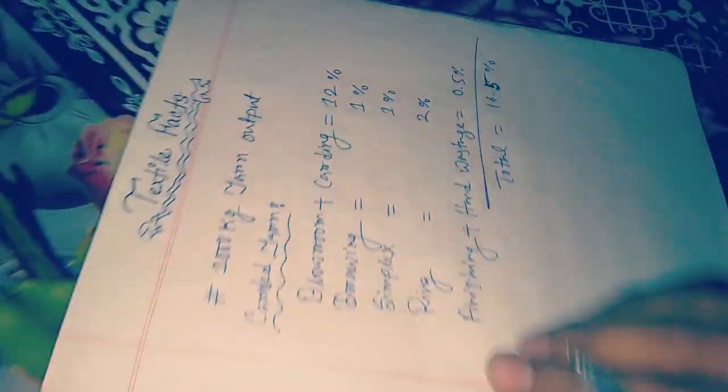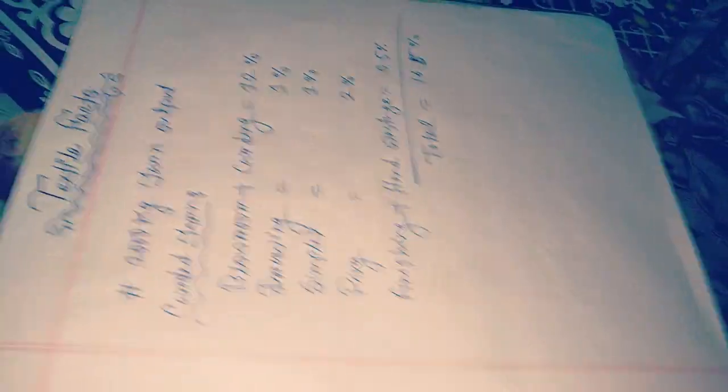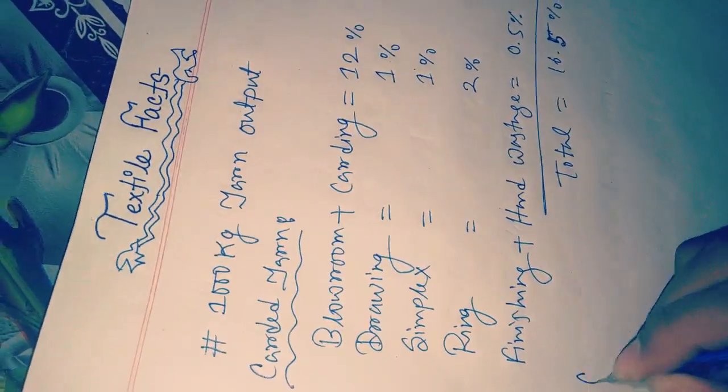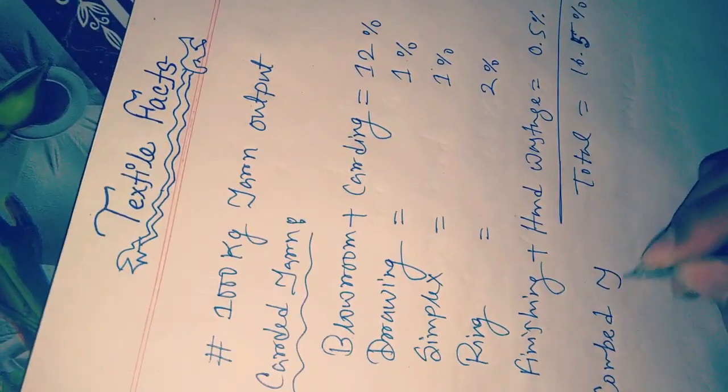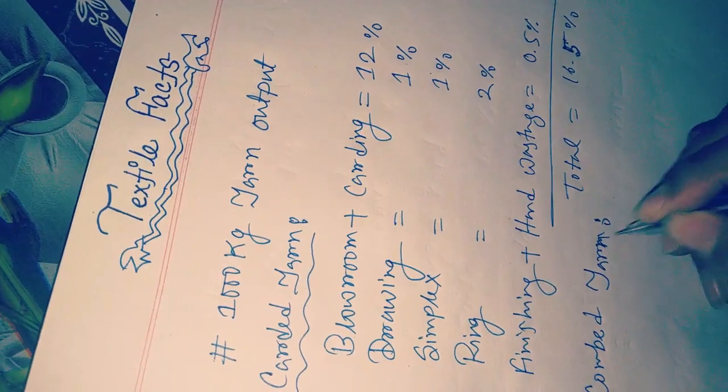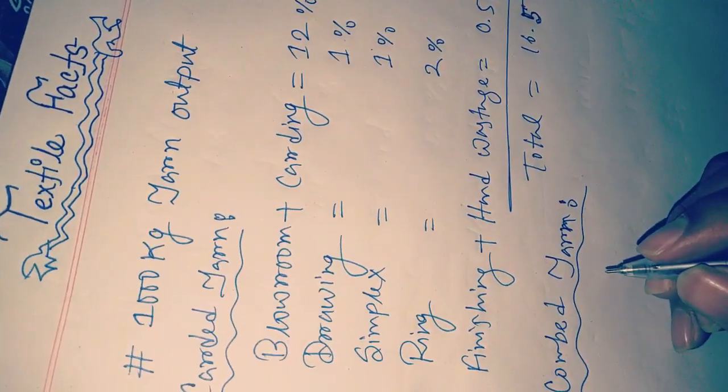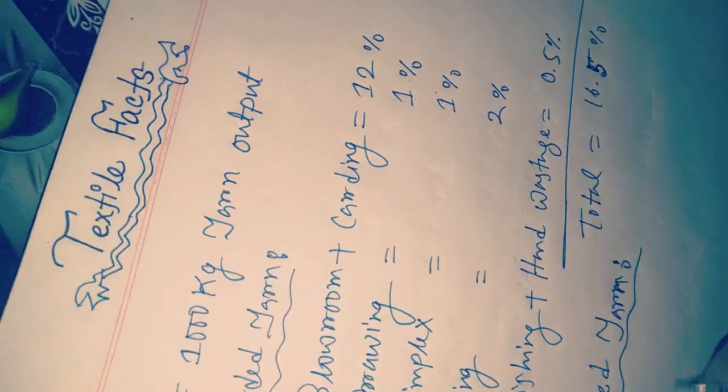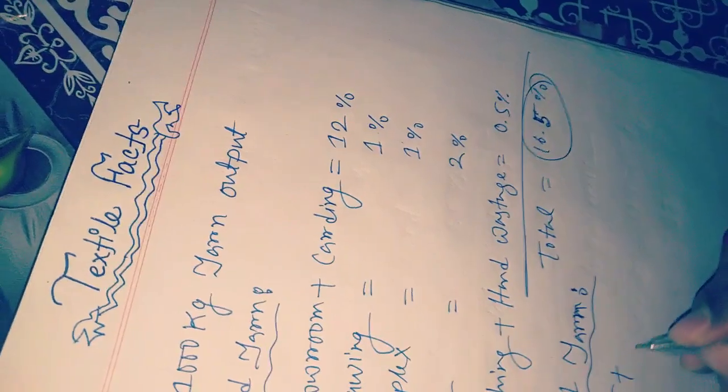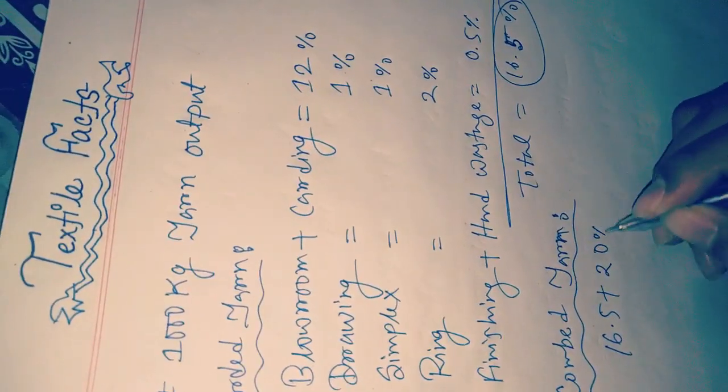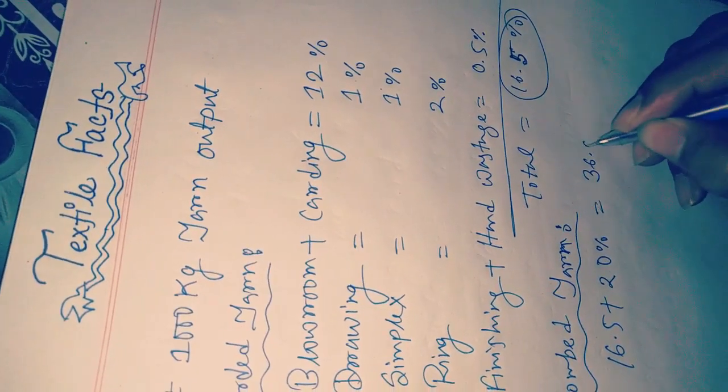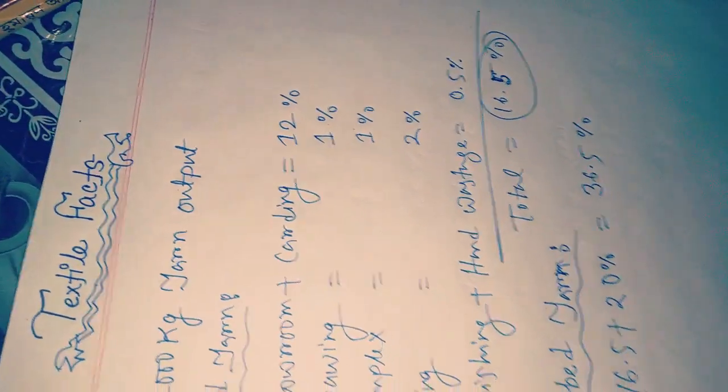If we calculate for combed yarn, we know that combed yarn is more finer than carded yarn. So here we have to add 16.5% plus 20% extra, which equals 36.5%. This is the calculation for combed yarn.